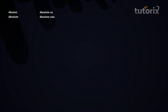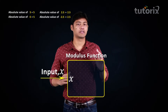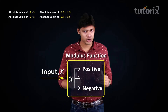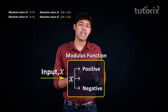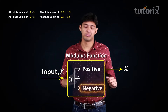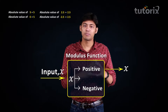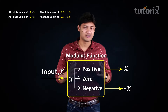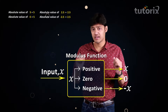So the modulus function, as soon as it accepts input X, first checks whether the input is positive or negative. If X is positive, the output will be the same number X. If X is negative, the output will be minus one multiplied by X, which is minus X. And if the input is zero, the output is simply zero.